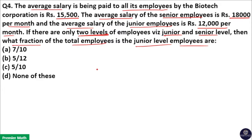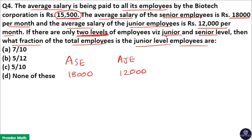Here I will use the allegation method, because the average salary of senior employees is 18,000 and the average salary of junior employees is 12,000, and there are only two levels of employees in this company. That means the average salary of total employees is the combined average of junior and senior levels. So the allegation method is the best approach here, with the total average being 15,500.